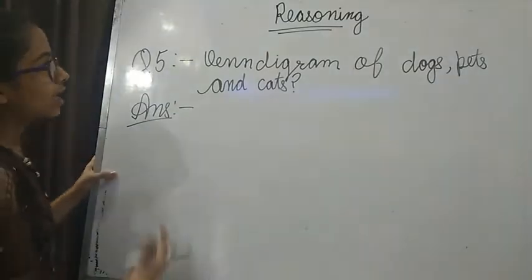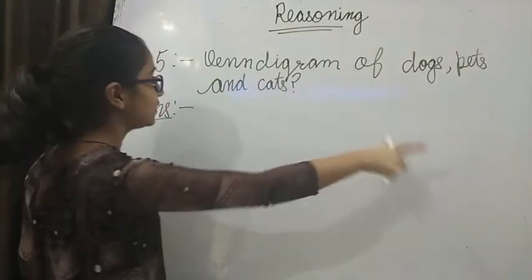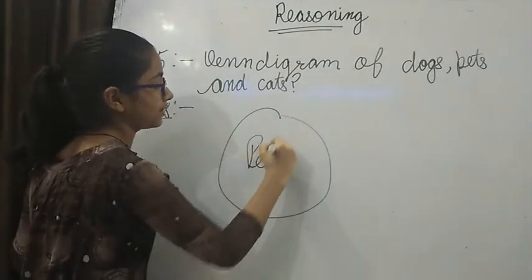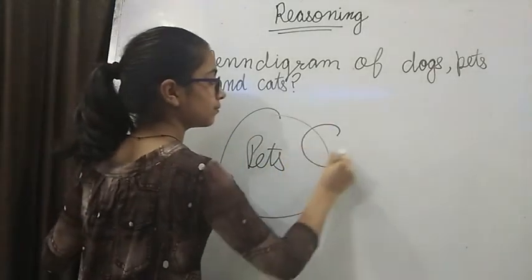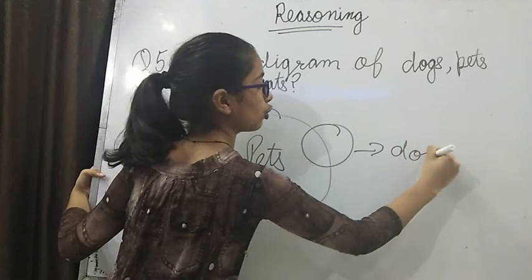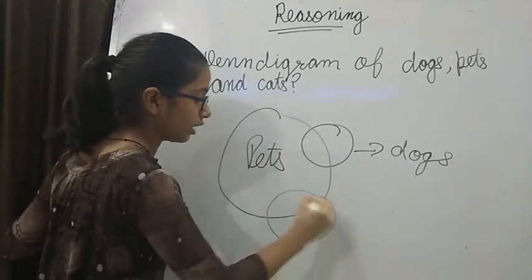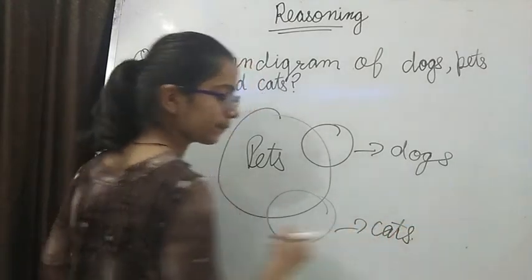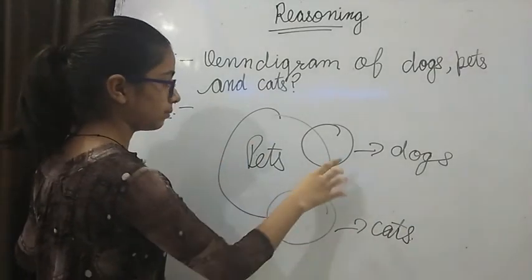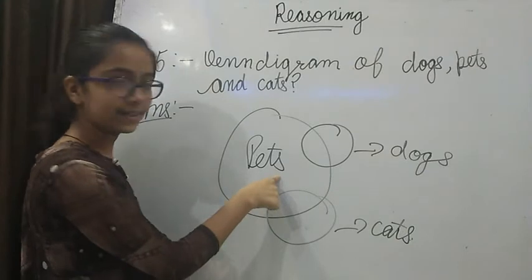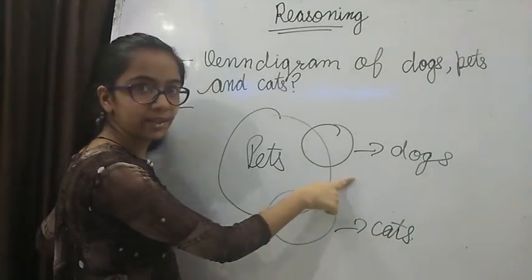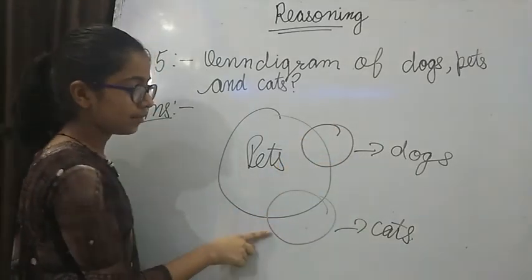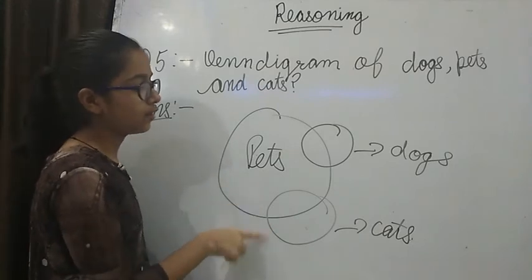Our fifth question is Venn diagram of dogs, pets and cats. These are pets. These are dogs. These are cats. So we have written like this, half in pets and half not in pets. Same like this in cats, half are pets and half are not pets.